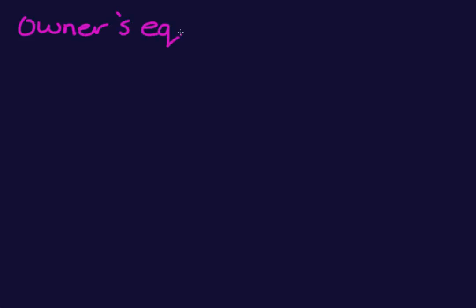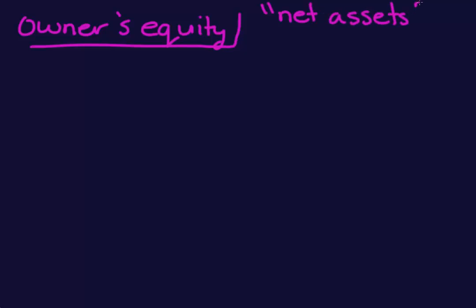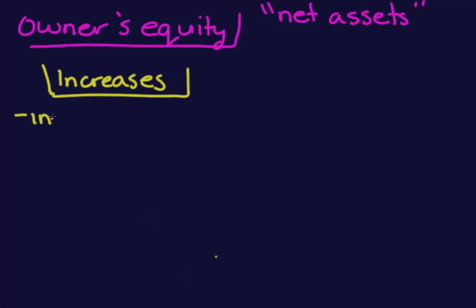Now let's talk about a term you may not have heard before: owner's equity. Owner's equity is probably the most confusing part of the accounting equation. Defined, owner's equity is the amount of the company's assets that remains after the liabilities are subtracted — sometimes we call it net assets. Items that increase owner's equity include investments, which can occur in cash or another type of asset. For example, if an owner puts in $5,000 cash and a $2,000 computer, both of those would be investments that increase owner's equity.